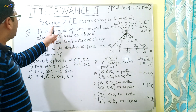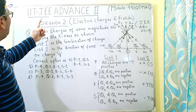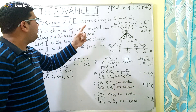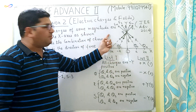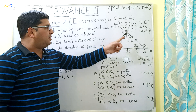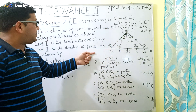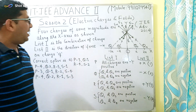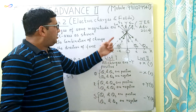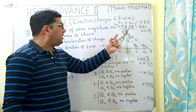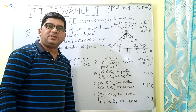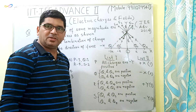Good morning everyone. This is session 2 from the playlist of JEE Advanced part 2. The chapter is electric charges and fields, and this is the question which was asked in the JEE Advanced paper in 2014. The level of difficulty is comparable to what could be asked in the board examination.